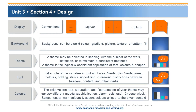A theme is the logical and consistent application of font, colors, and shapes. It is important to take note of the variances in font attributes — serifs, sans-serifs, sizes, colors, bolding, italics, underlining — which are useful in drawing distinctions between headers, content, and other media. The relative contrast, saturation, and fluorescence of your theme may convey different moods: sophistication, alarm, coldness. Choose wisely. Select neutral main colors, and select accent colors unique to the given context.